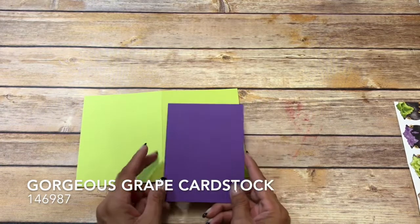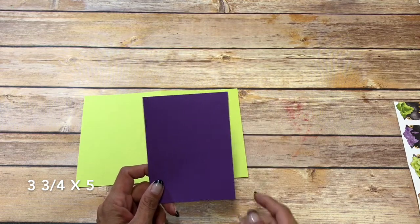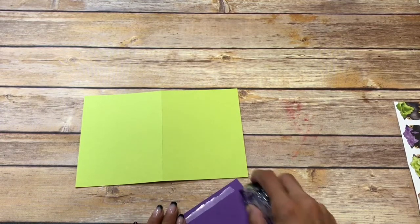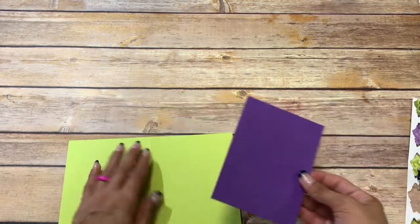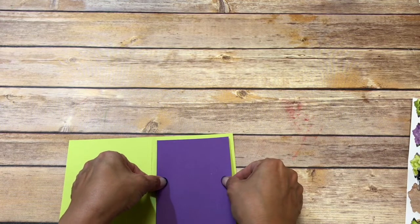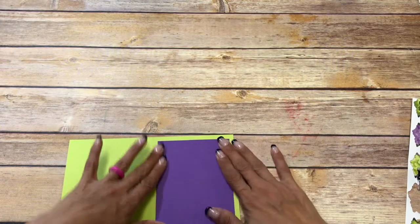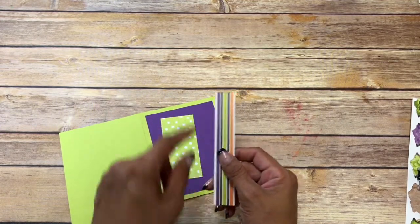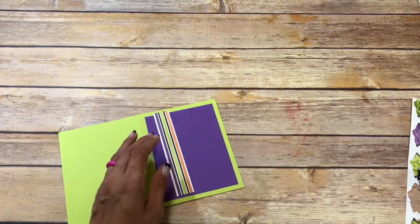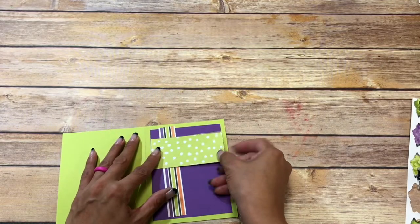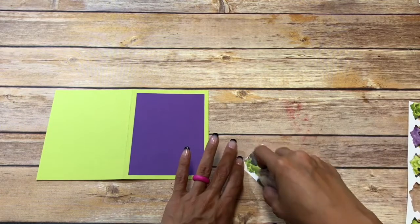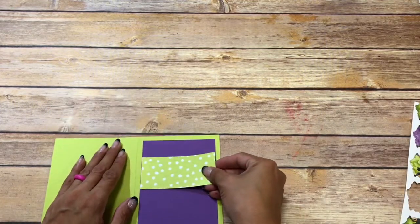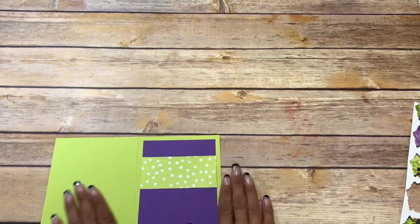So I have a piece of Gorgeous Grape and this is cut at three and three quarters by five. Now from the Toil and Trouble designer series paper, I cut this at five, and these are the cauldrons, and then I just cut that at three and three quarters. So we're going to put that down as well.